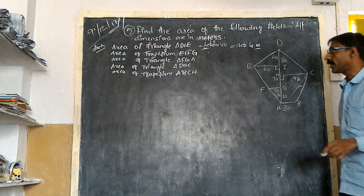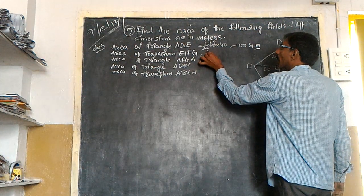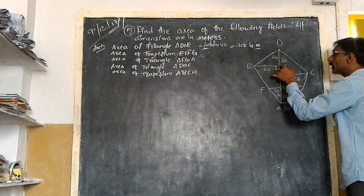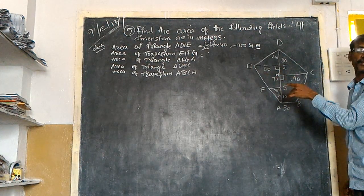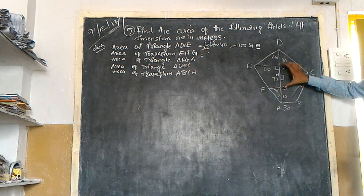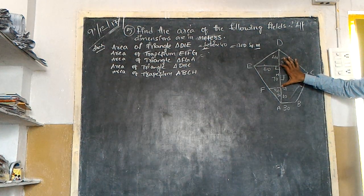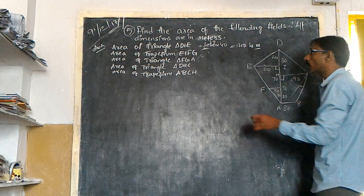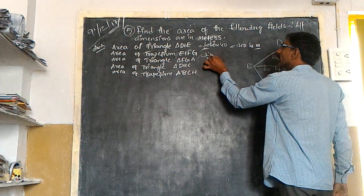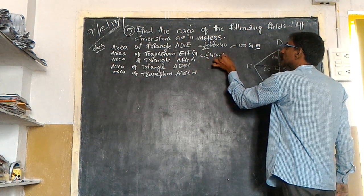So the very next one is trapezium. See here, this was my trapezium. Keep in mind, these two are parallel sides and this is the distance between the parallel sides. So we have to take half H into A plus B.